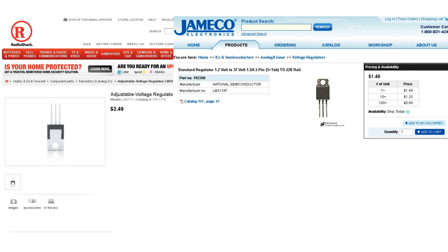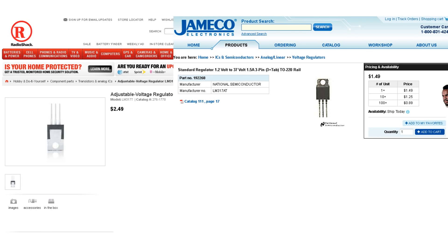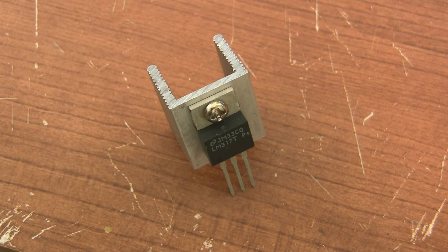Sometimes they're called LM317T or LM317AT. Once you've got it put a heat sink on it so it doesn't melt your breadboard.